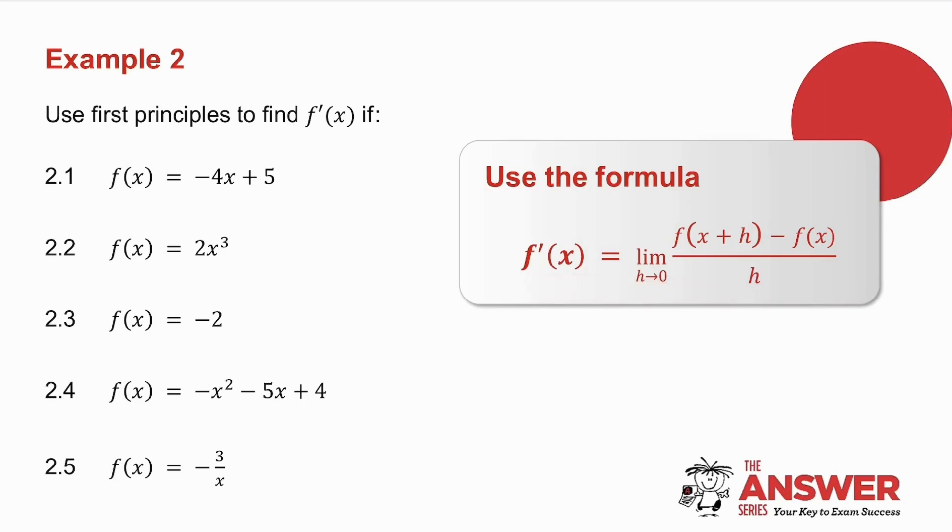So I've given you five examples. What I want you to do is I want you to pause the video and I want you to try them. You might want to try one at a time. So try 2.1, and then look at the solution when we do it together. Then go back and pause the video and try 2.2, and so on. So pause the video, try 2.1, and we'll have a look and see together.